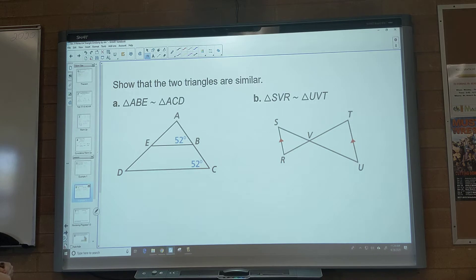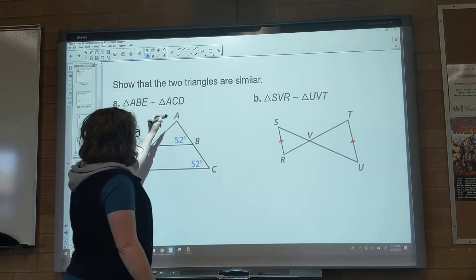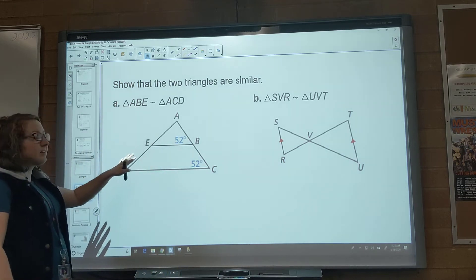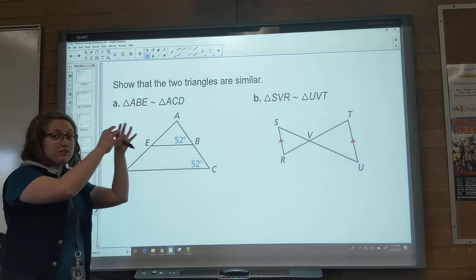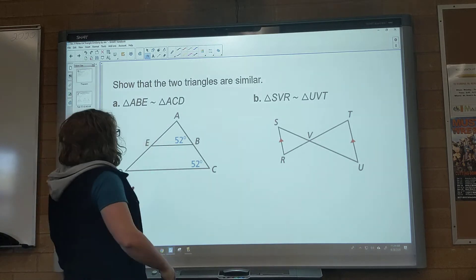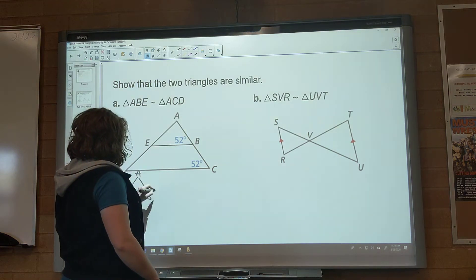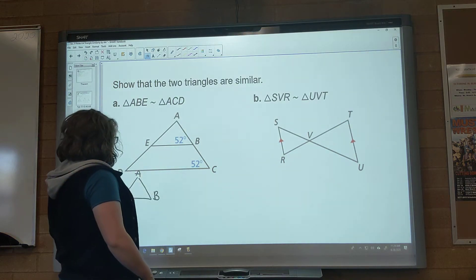Okay, so the two triangles are similar. Okay, so we've got ABE, which is this little one, and ACD. So remember what we do with this picture, we're going to split it apart because it's a smaller triangle inside a big triangle. So I've got ABE, ABE.